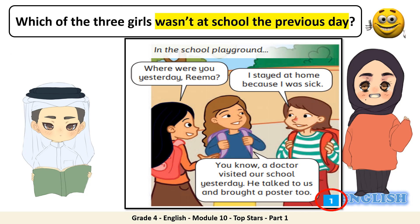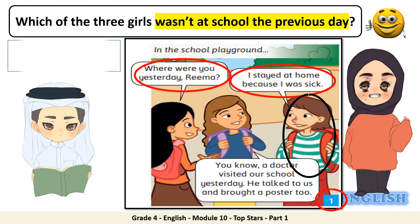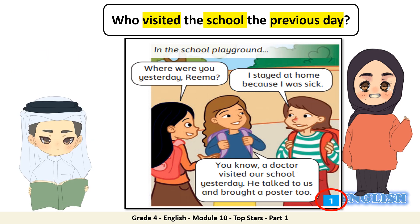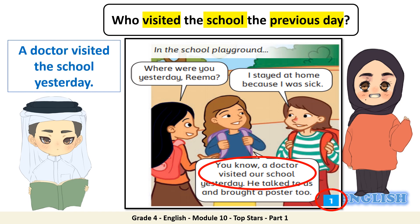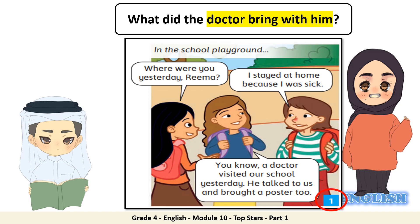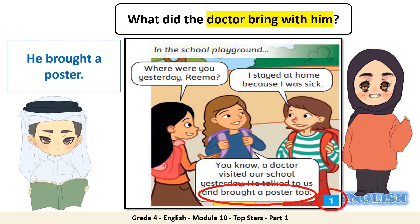Let's start with frame number one. Where was Rima on the previous day? She was at home. Which of the three girls wasn't at school the previous day? Rima. Who visited the school the previous day? A doctor visited the school yesterday. What did the doctor bring with him? He brought a poster.